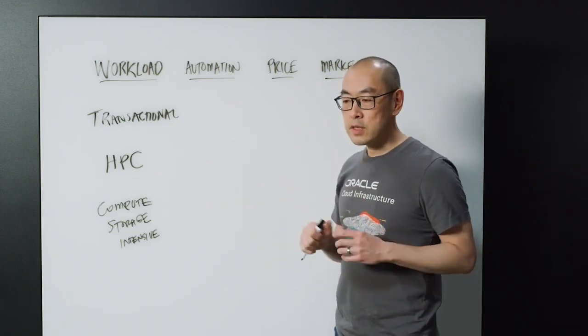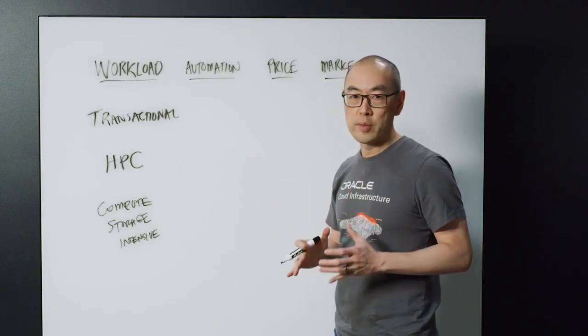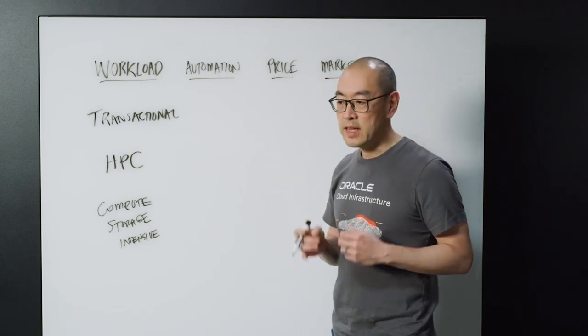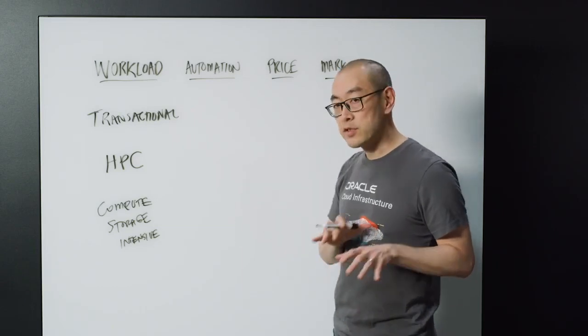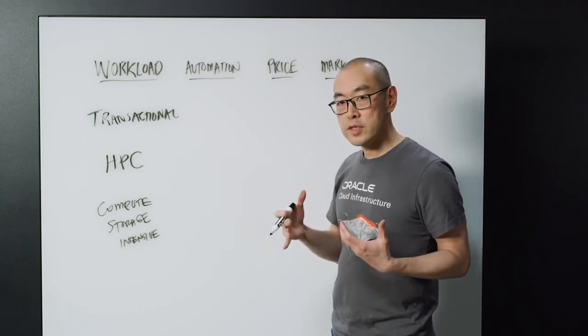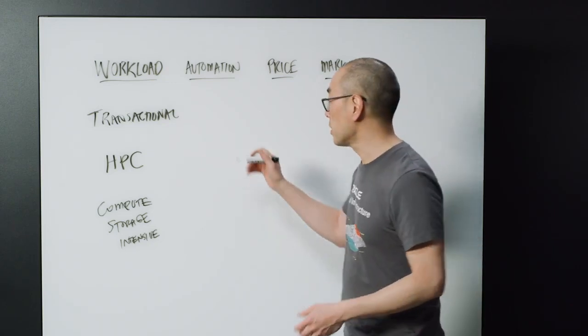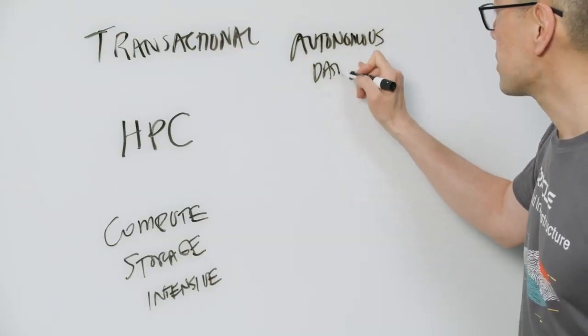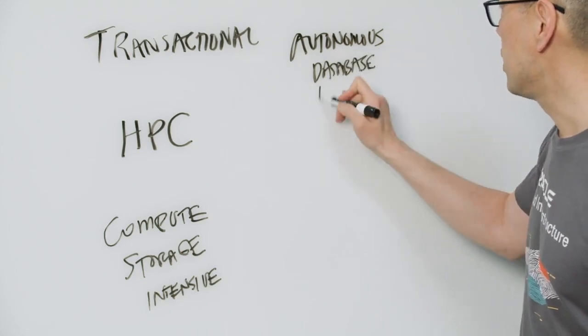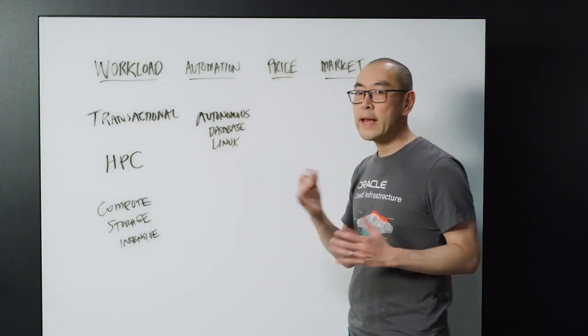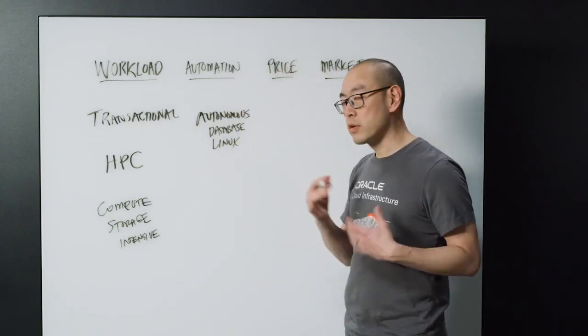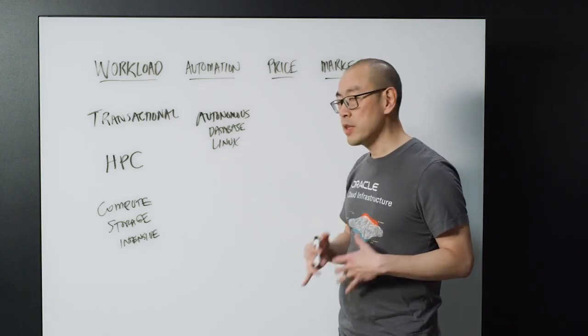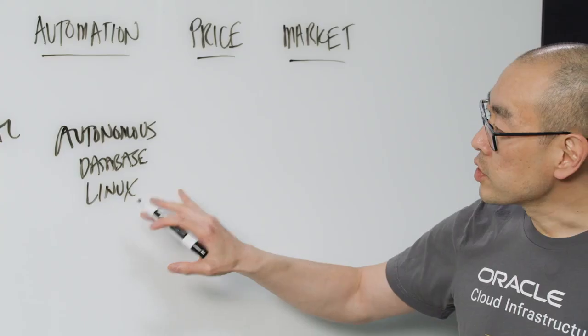Automation. There's definitely certain clouds that focus a lot on automation where you're basically just handing over your code and you're letting the provider do everything else. And they may even be down to the point where it's language-specific. Certain clouds are very, very good at that. Where Oracle Cloud is focused is there is some degree of automation that's possible. We have something we call the Autonomous Database and now something we call Autonomous Linux where these are totally hands-off types of services where you're literally creating a database. It's self-tuning and patching and performance tuning.